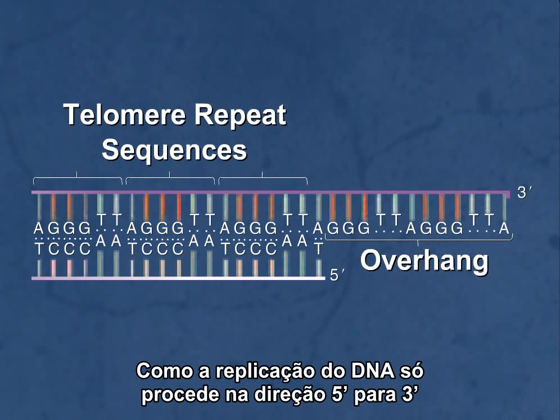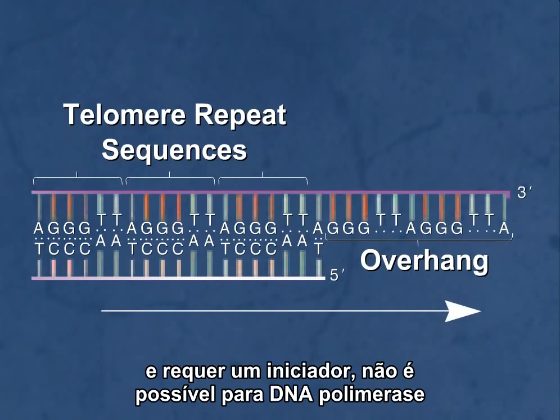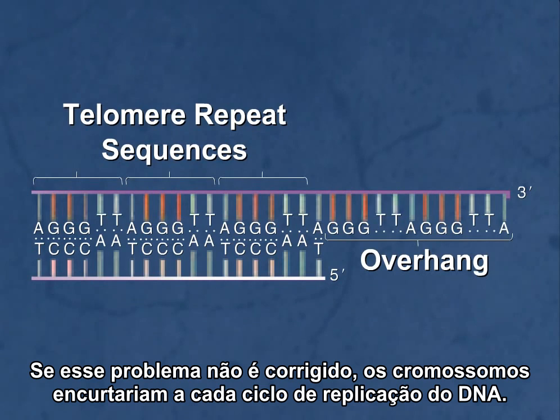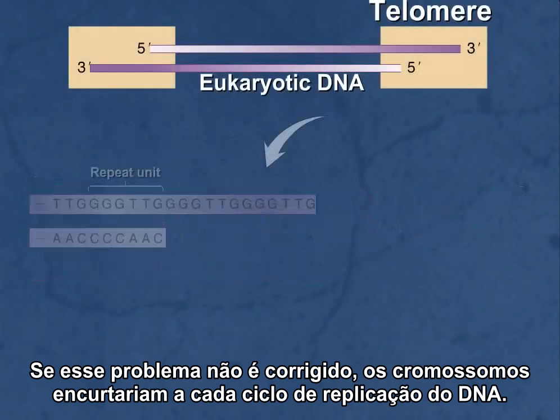Since DNA replication can only proceed in the 5' to 3' direction and requires a primer, it is not possible for DNA polymerase to replicate the 3' ends of linear chromosomes. If this problem were not corrected, chromosomes would shorten with each cycle of DNA replication.